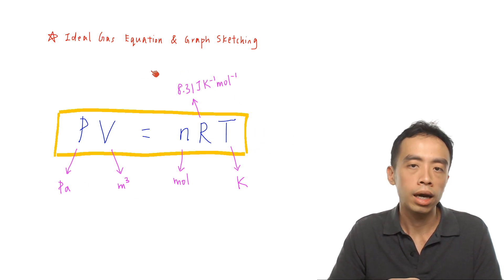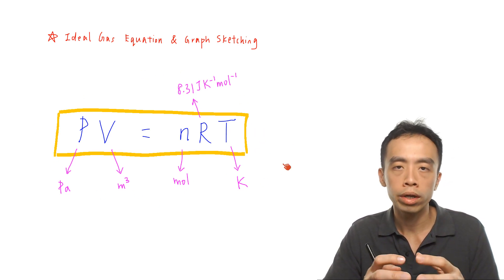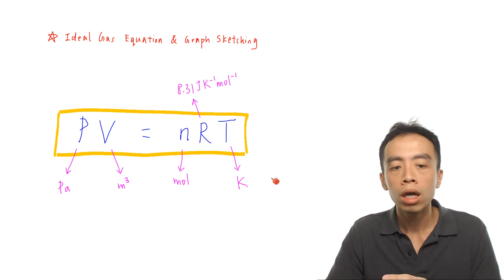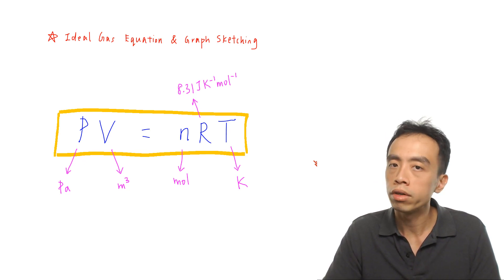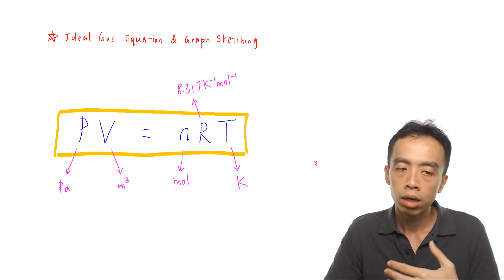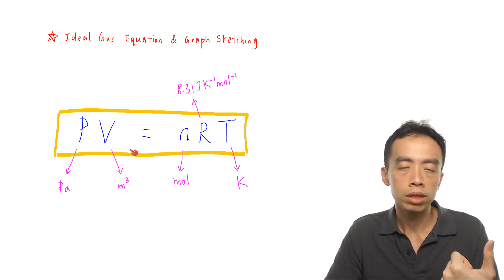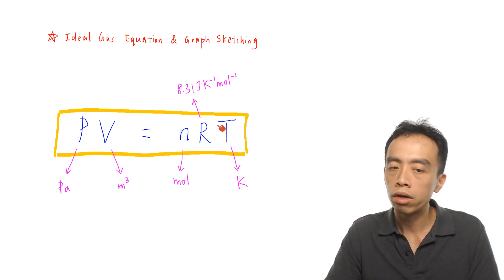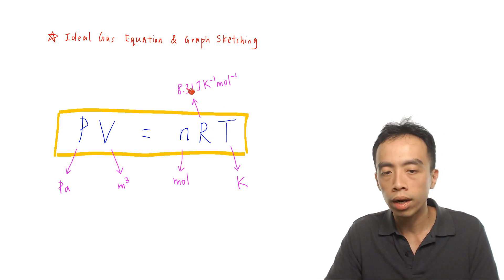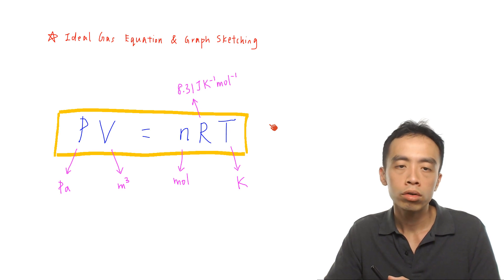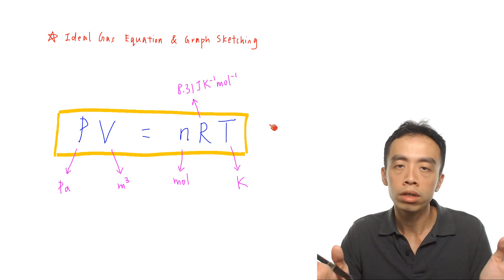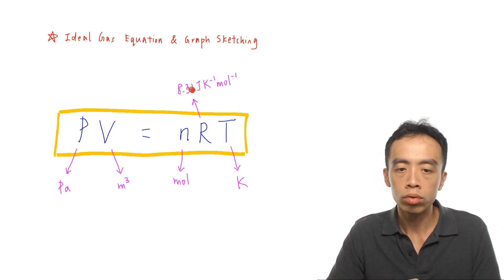When doing calculations involving PV equals nRT, it is very important to convert everything into SI units. Pressure must be in Pascal, volume must be in meter cubed, number of moles in moles, R is 8.31, and T must be in kelvin. If questions give non-SI units, we need to convert them before substituting into the equation.